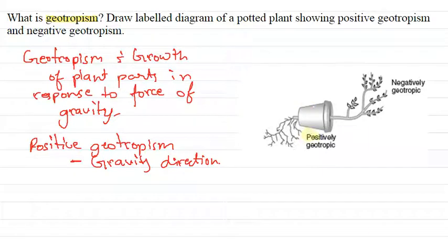In this diagram, we can see the roots are positively geotropic. They are growing toward gravity, and the shoot is negatively geotropic because it is growing in the opposite direction of gravity.